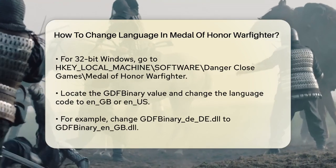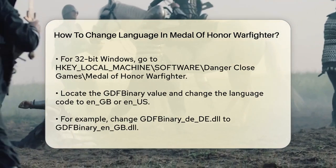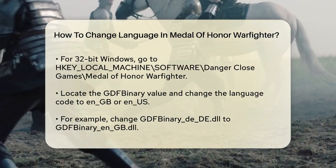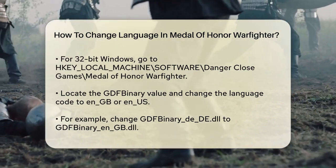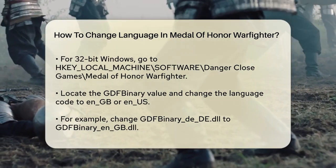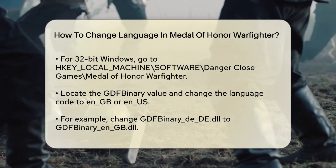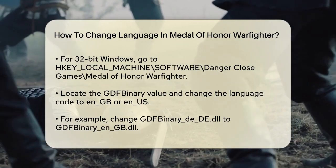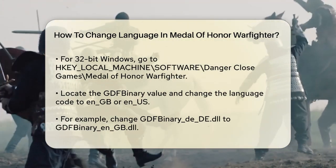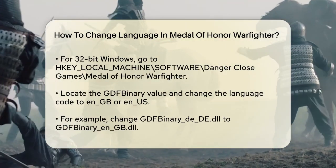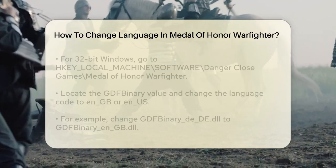In this directory, you'll find two key values that you need to change. The first one is the gdfBinary value. Double-click on it and change the language code to ENGB or ENUS, depending on the English version you prefer. For example, if it says gdfBinaryDEDE.dll, change it to gdfBinaryENGB.dll.